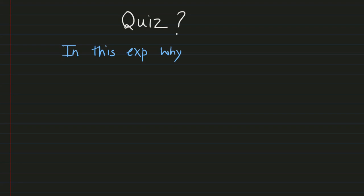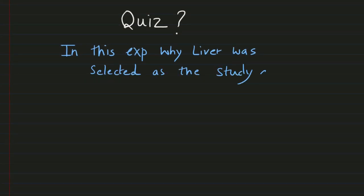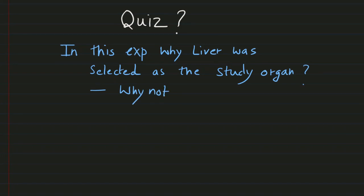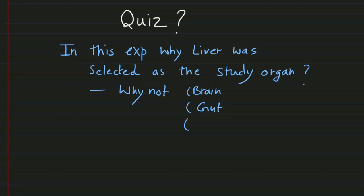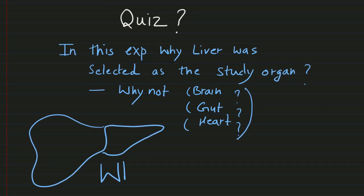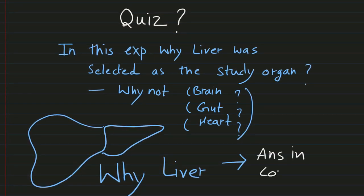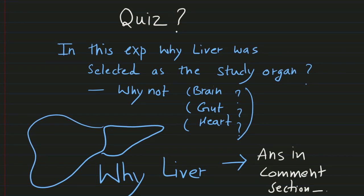Here is a quiz question on this experiment. Why was liver selected as the study organ in this experiment to study protein synthesis? Why not brain, gut, or heart? Why were these organs excluded? Please answer in the comment section.